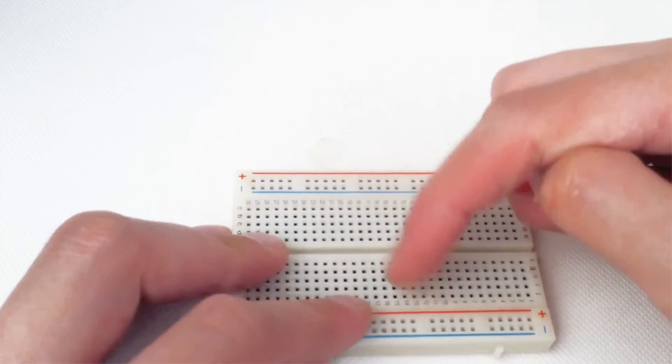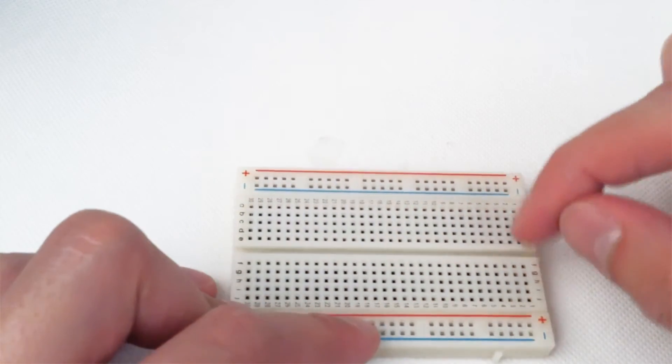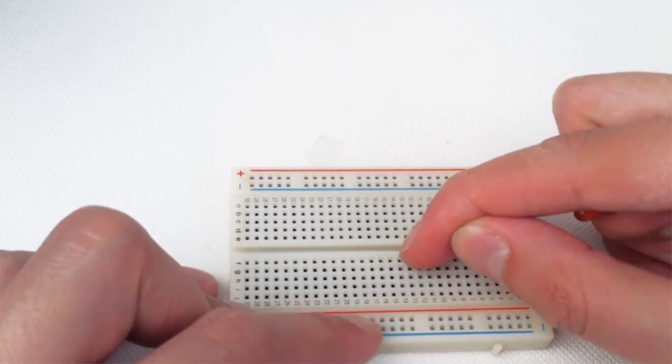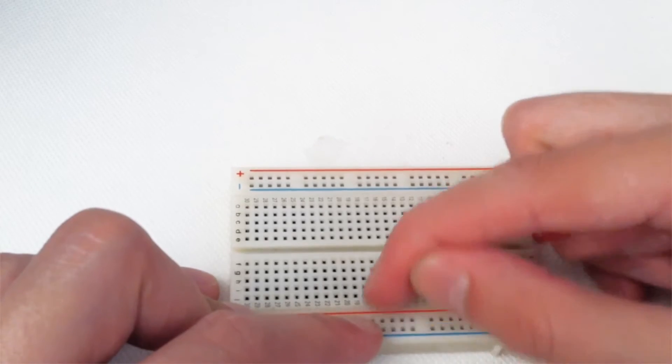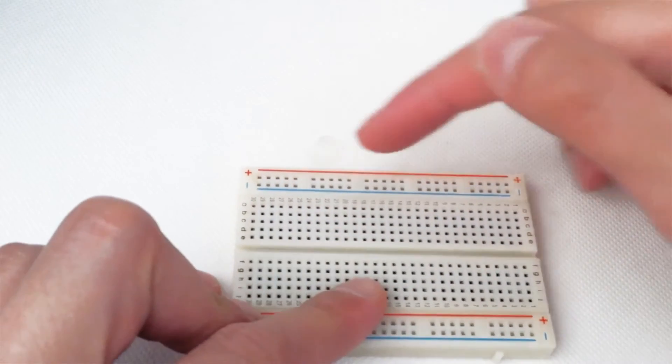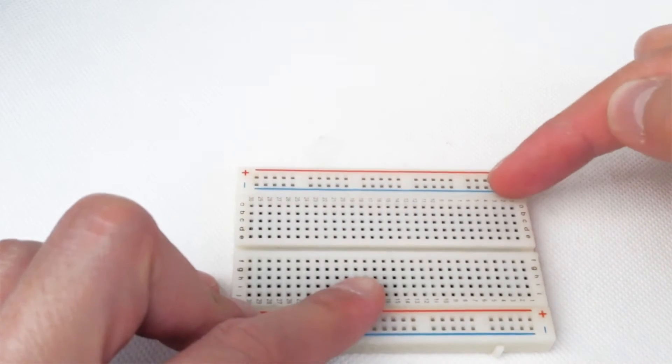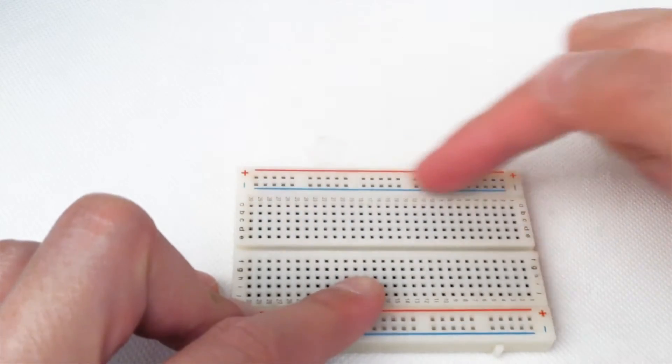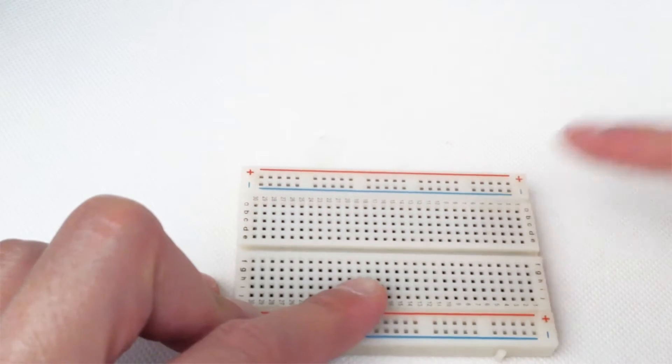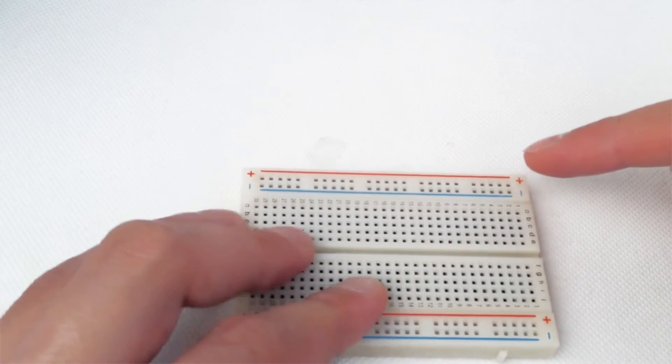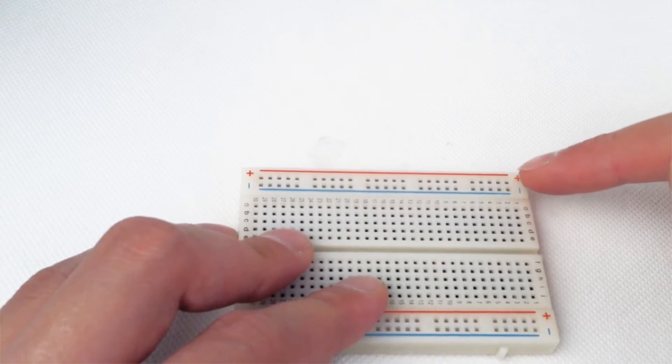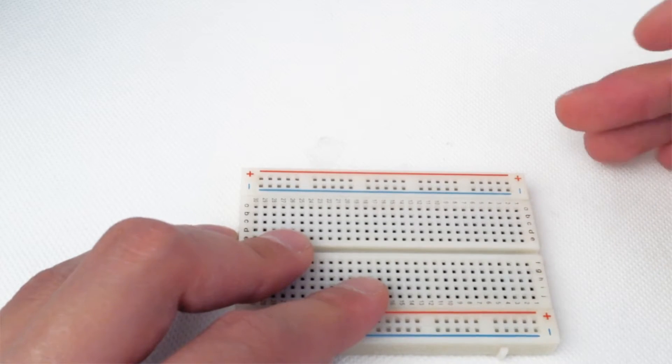This row is interconnected, this is interconnected, and so on. These end columns are connected for the whole length of them, so we have this length and this length. They're normally used for power, which is why they're called power rails. You can see these signs just to help the person when they're putting it together.